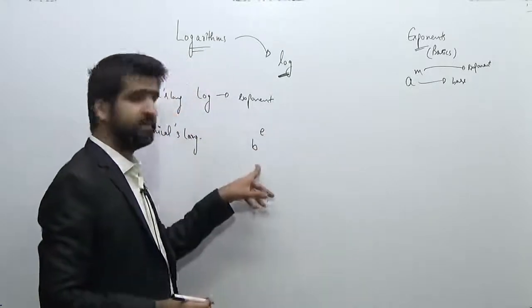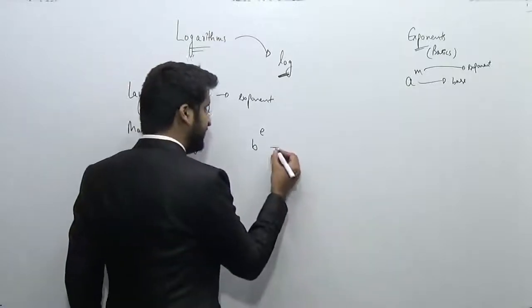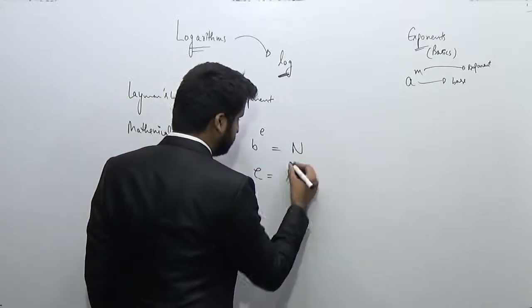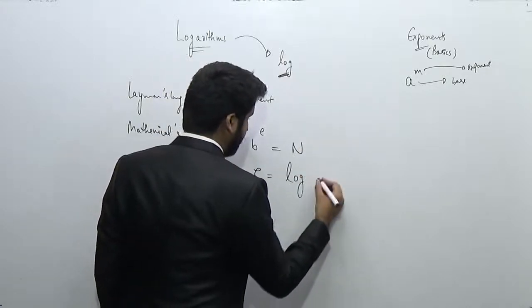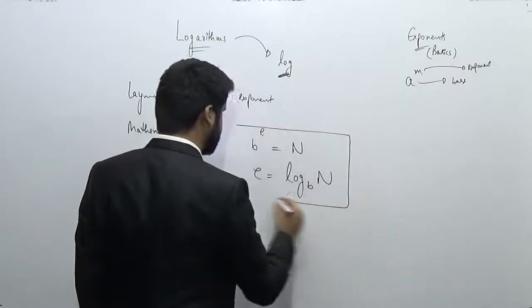So in mathematical language we can say that if base to the power exponent—I am representing this base by b and exponent by e—if base to the power exponent is our given number, we can say that e is equal to log n to the base b. So this is the basic definition of log.